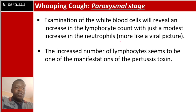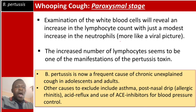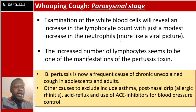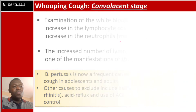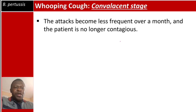The increased lymphocyte count is one of the manifestations of pertussis toxin. Bordetella pertussis is now a frequent cause of chronic unexplained coughs in adolescents and adults. In differential diagnosis, other causes to exclude include asthma, post-nasal drip (allergic rhinitis), acid reflux, and use of ACE inhibitors for blood pressure control. The convalescent stage sees attacks become less frequent over a month, and the patient is no longer contagious.